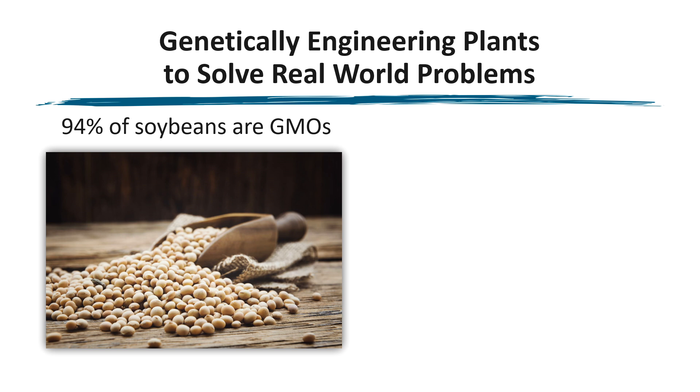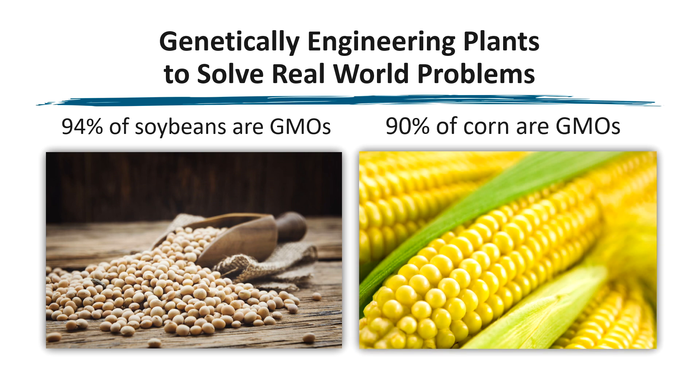Which it usually isn't. In fact, this method is so efficient that even some farmers who want to avoid growing GMOs can still accidentally wind up growing plants that have been pollinated from GMOs and now carry these altered genes. As of the time of recording this lesson, 94% of all soybeans grown are GMOs, and 90% of all corn grown are GMOs. Perhaps you can see why this might concern someone who is skeptical about the safety of GMOs.